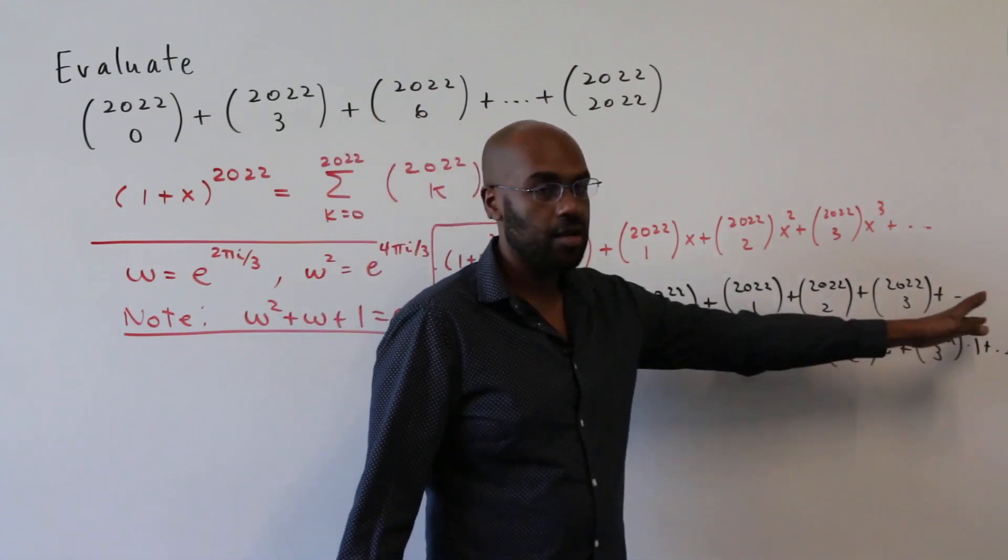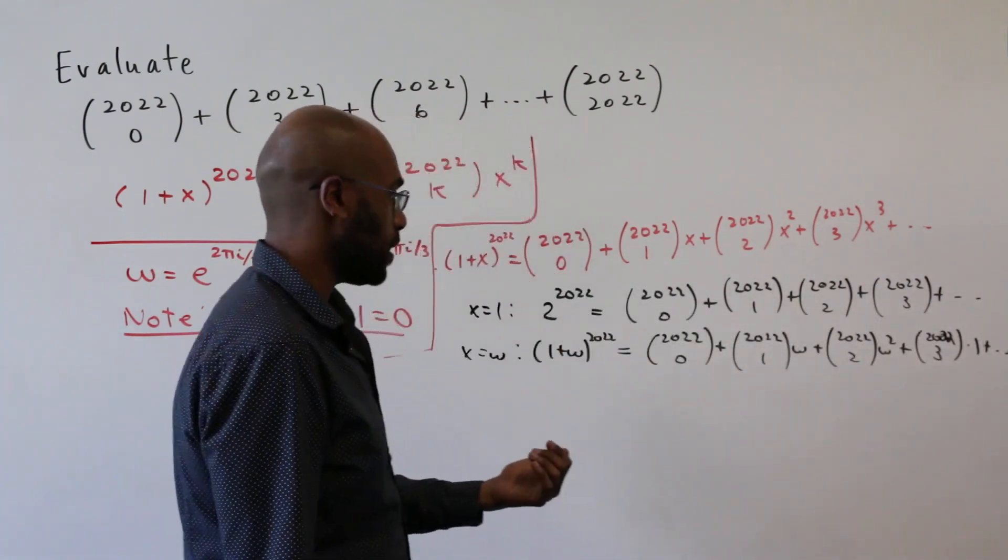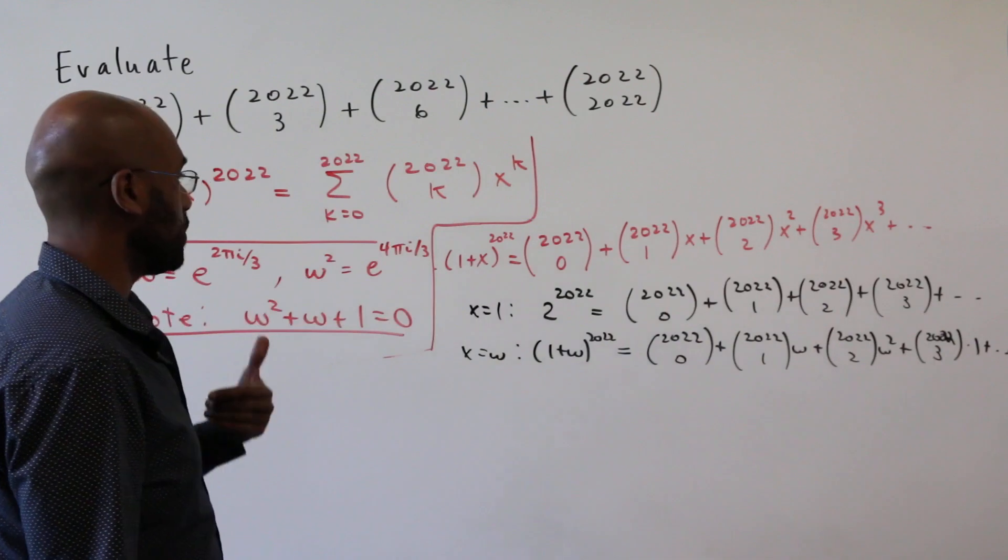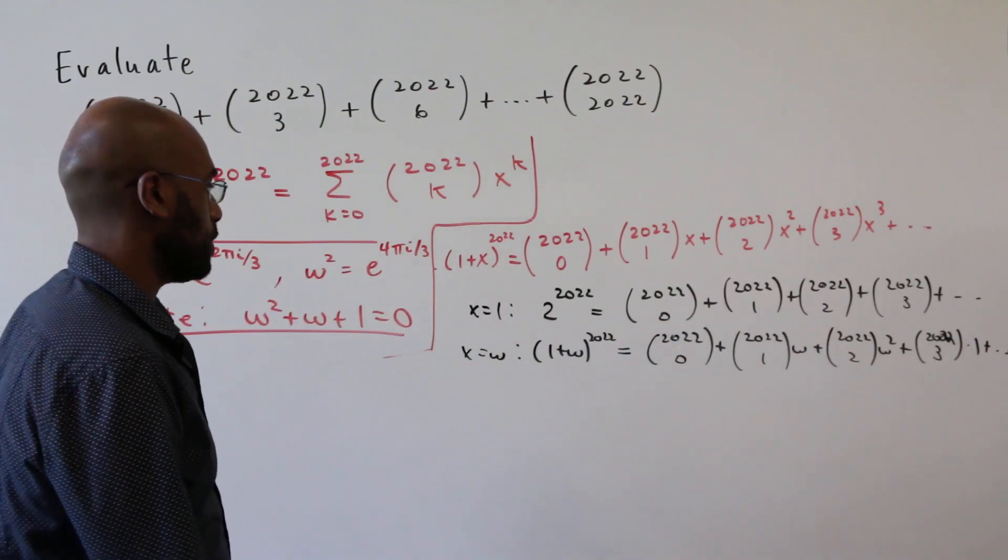The next thing we'll get is an omega to the fourth, which is omega, because omega cubed is one.